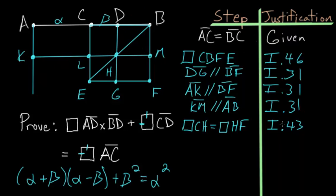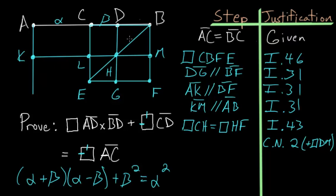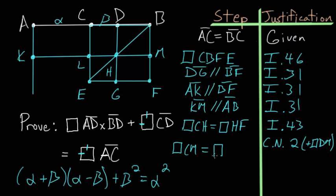Now let's take both of those parallelograms and add parallelogram DM to both of them. Common Notion 2 says that if we add equals to equals the results are equal. Adding DM to parallelogram CH gives us the new parallelogram CM. So parallelogram CM equals HF plus DM, which gives us parallelogram DF.